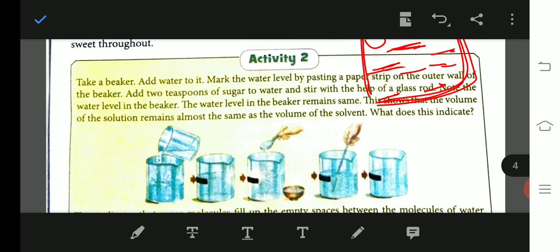Next, here is an activity. Let us see. Take a beaker, add water to it, and mark the water level by pasting a paper strip on the outer wall of the beaker.